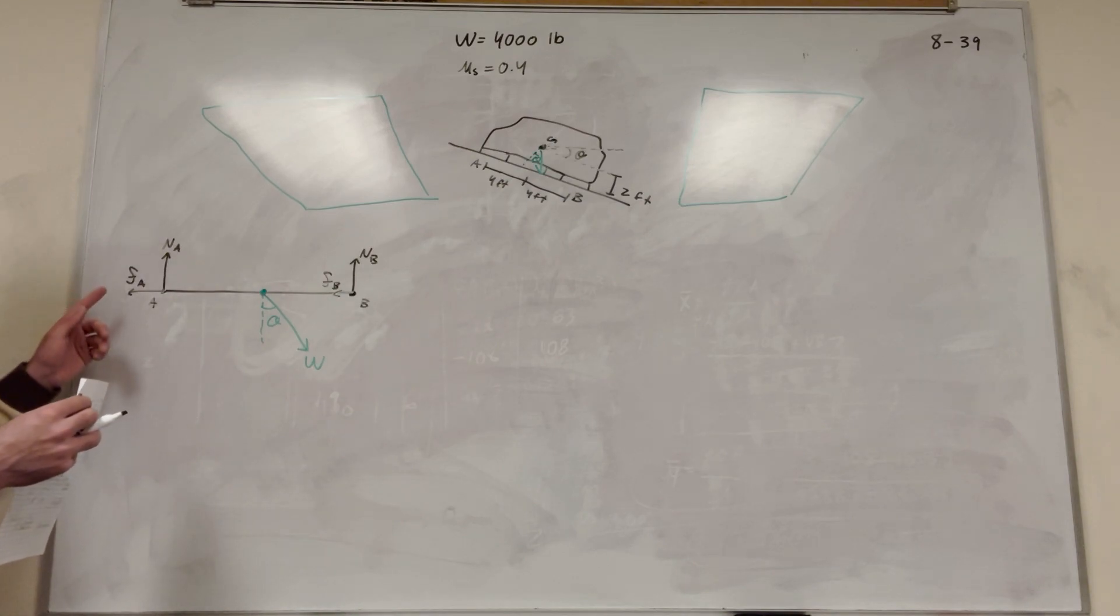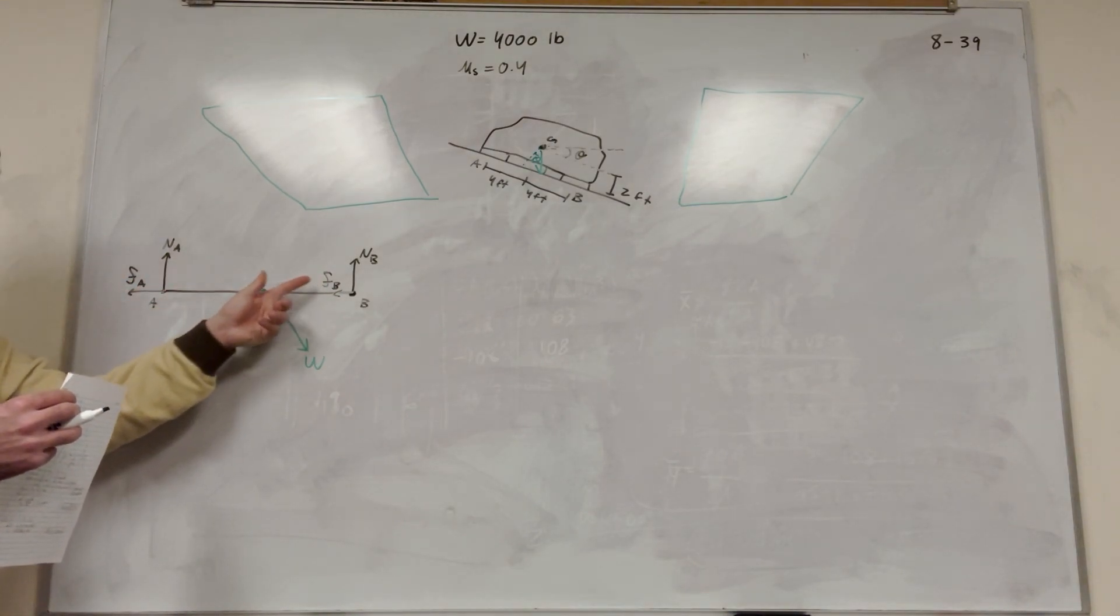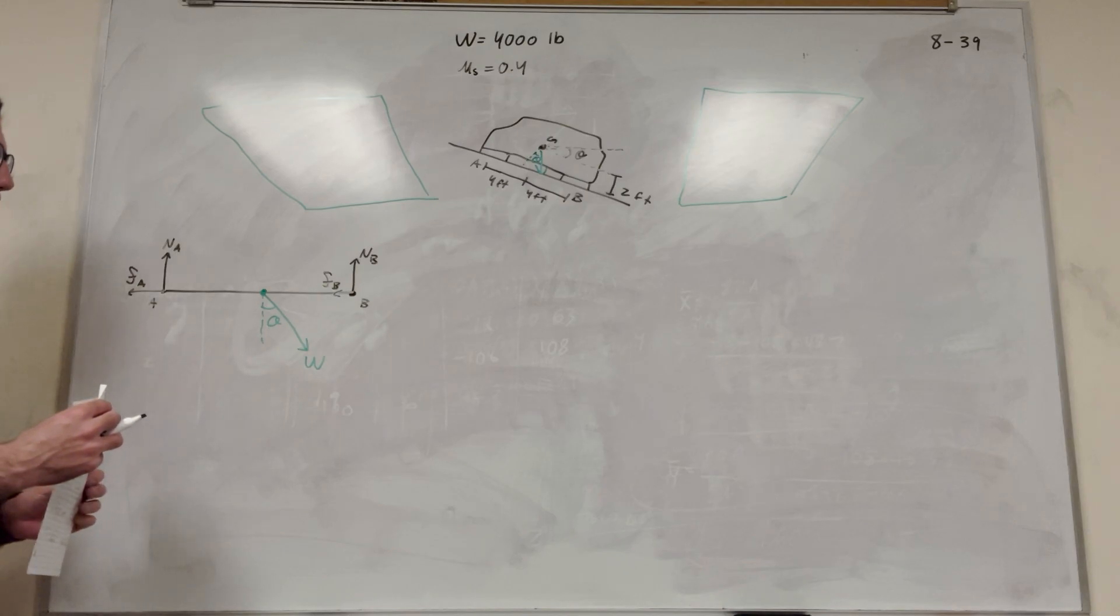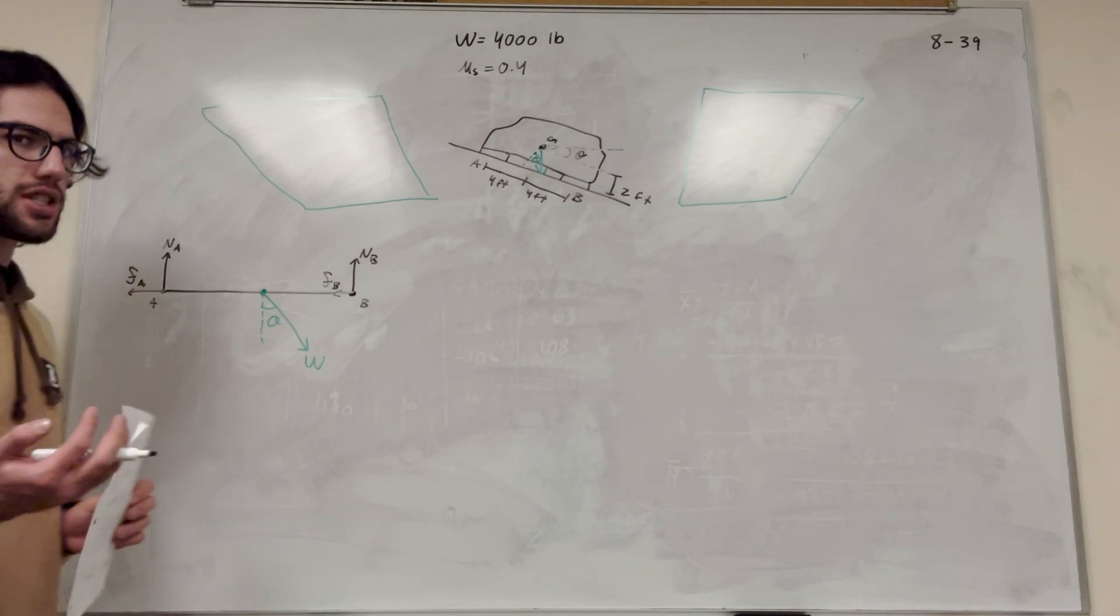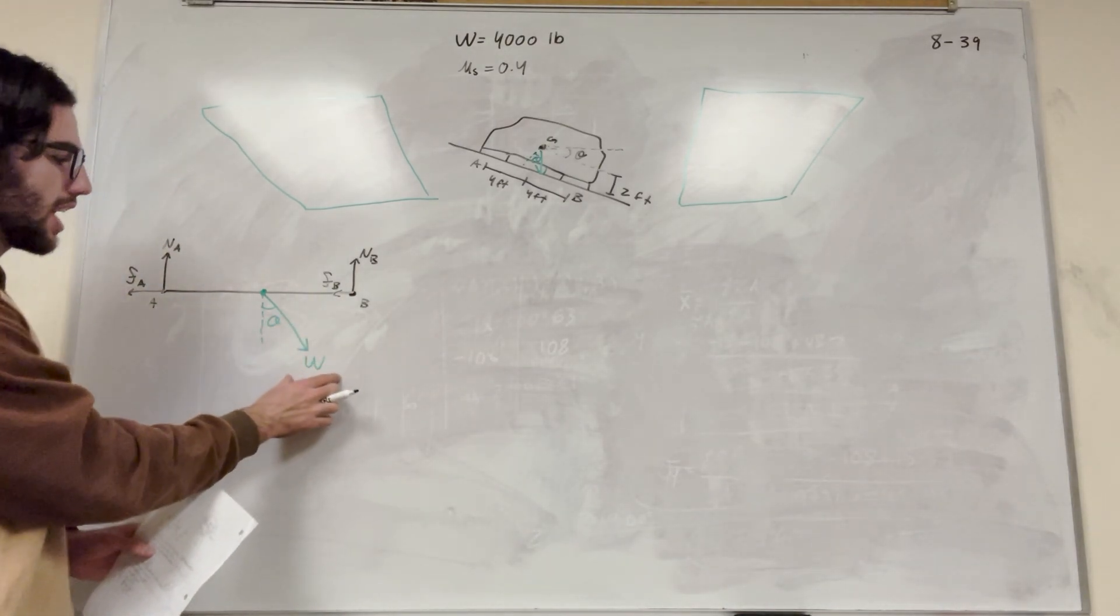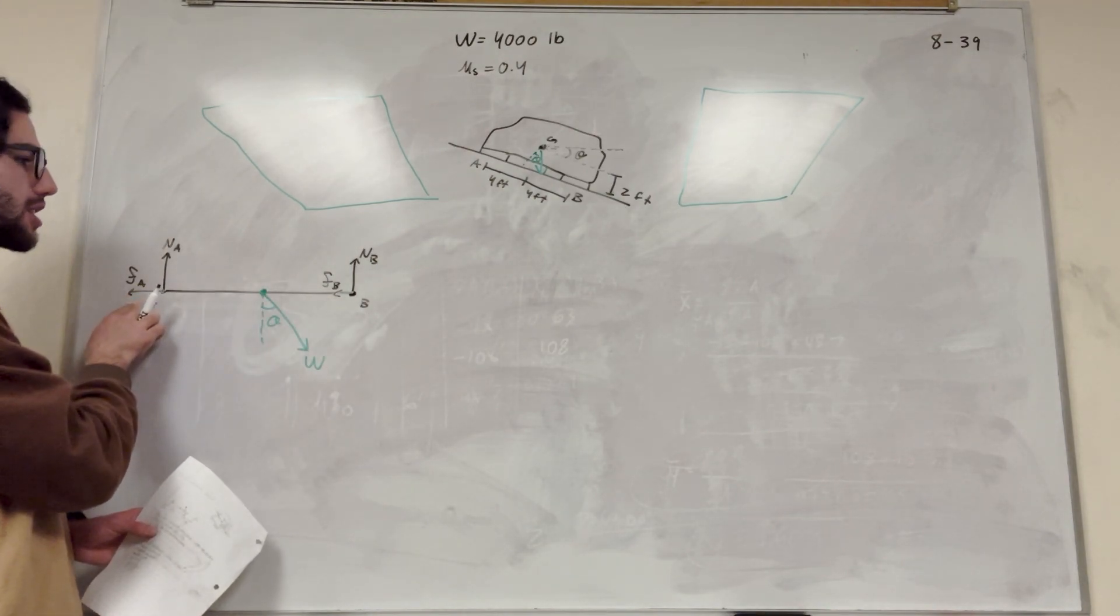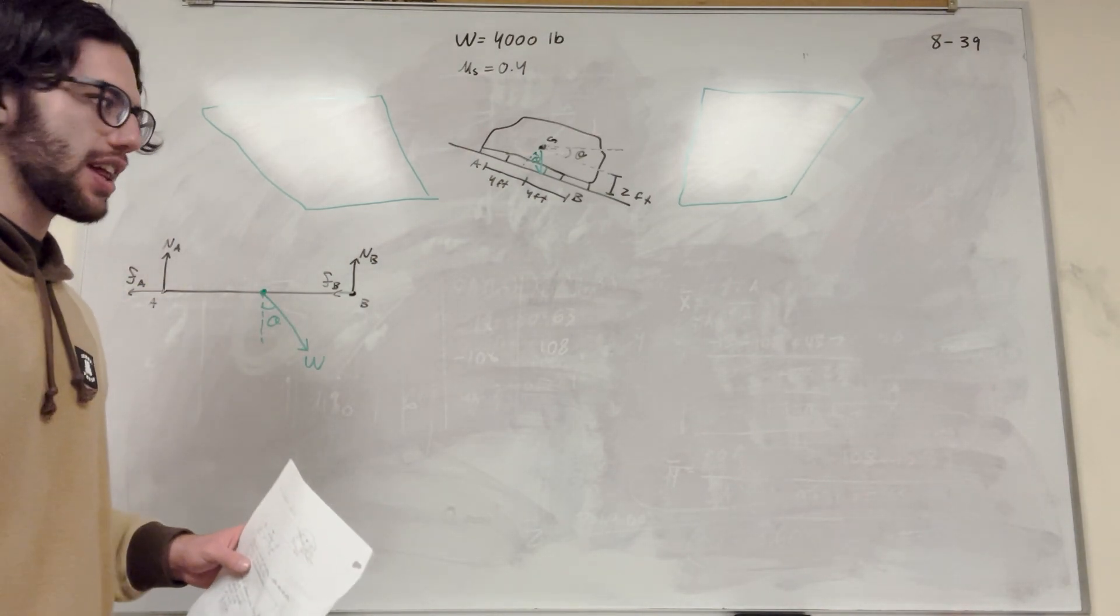Now we basically just want to figure out how much these frictions can be without slipping. So we need the sum of the forces in the X to be zero, because the weight is going to stay the same. The theta can change, but these frictions are always going to be maxed out. So let's just figure that out now.